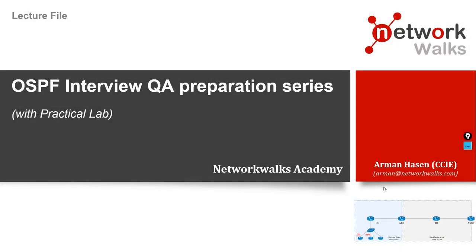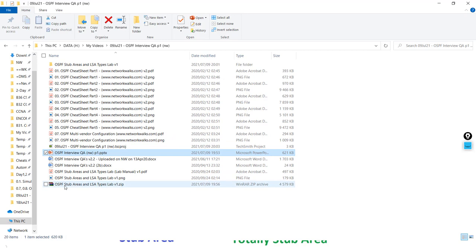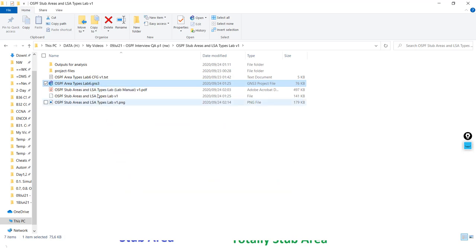Welcome everyone to the OSPF part of interview preparation. As always, we will prepare the interviews along with a practical approach. I have prepared this lab for you guys. Here I have tried to design a small enterprise network with an OSPF area — we have stub, normal, totally stubbed, redistribution, and BGP concepts. It's a complete lab prepared in GNS3. After extraction you can open the GNS3 file or directly open the GNS3 project. I have created a portable one so you don't face any problems.